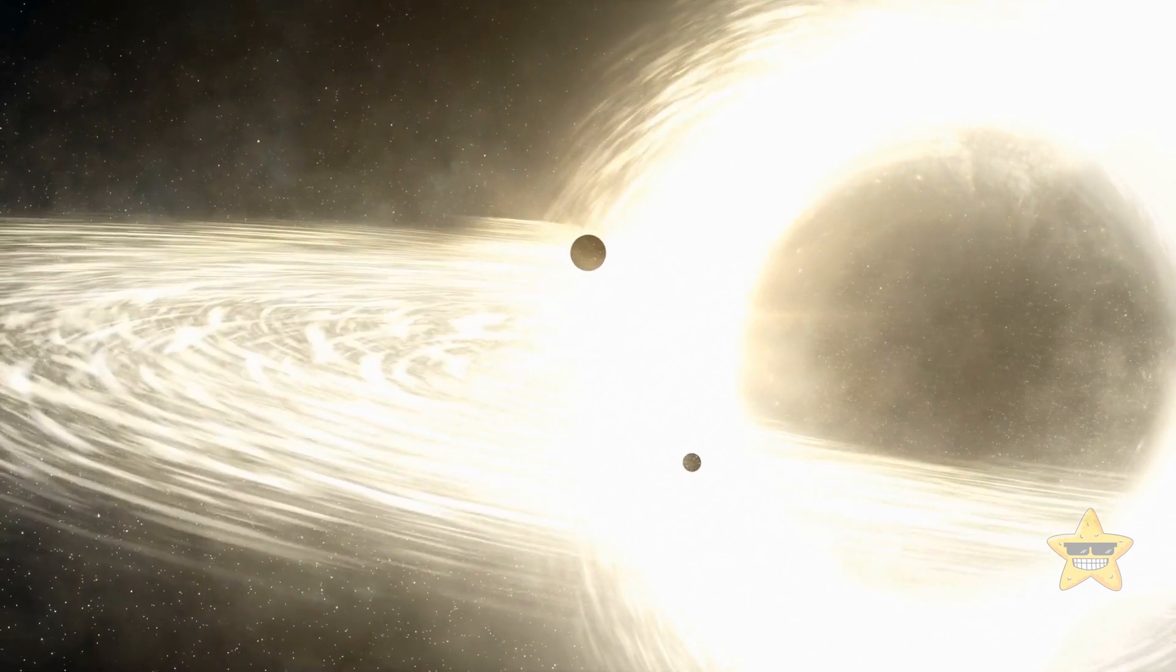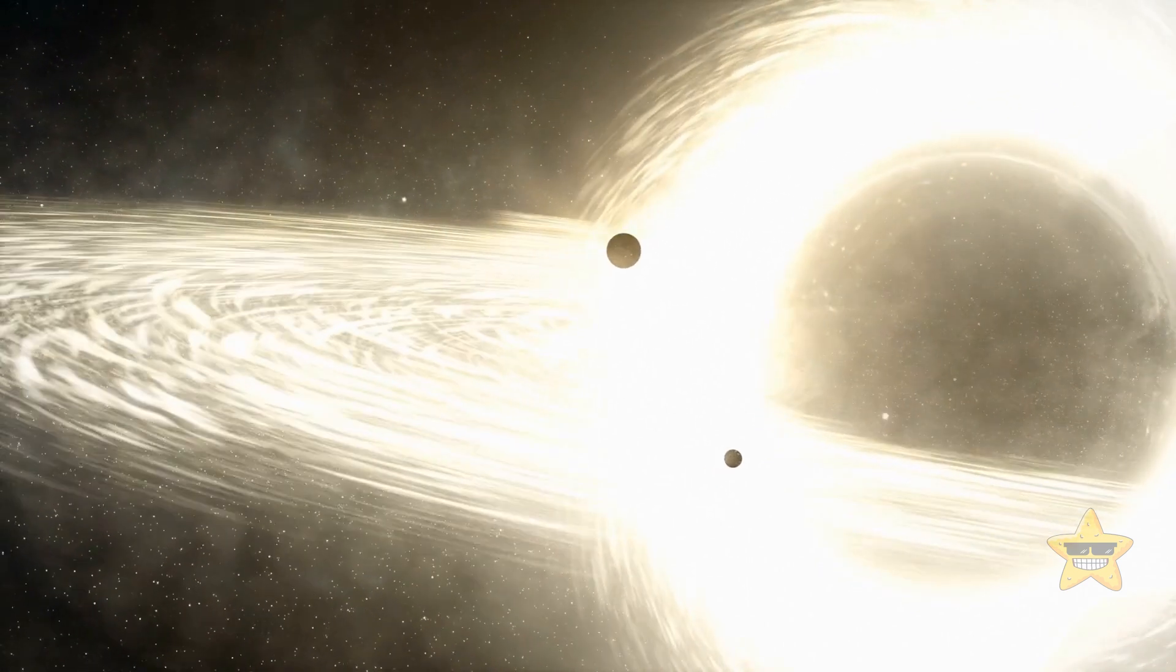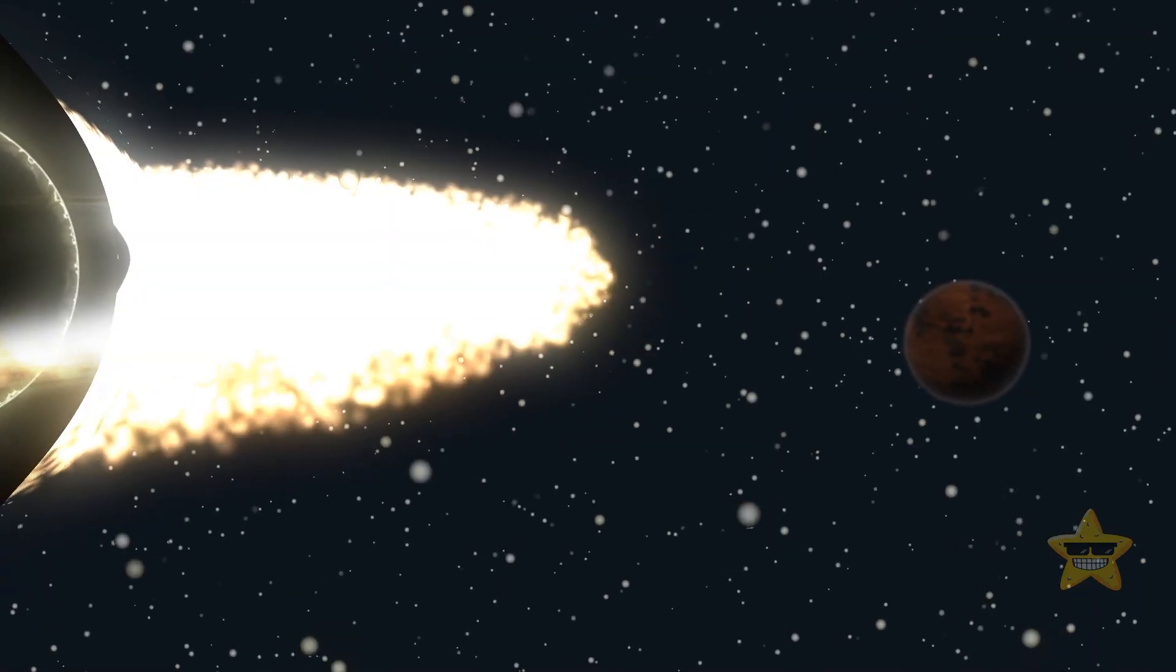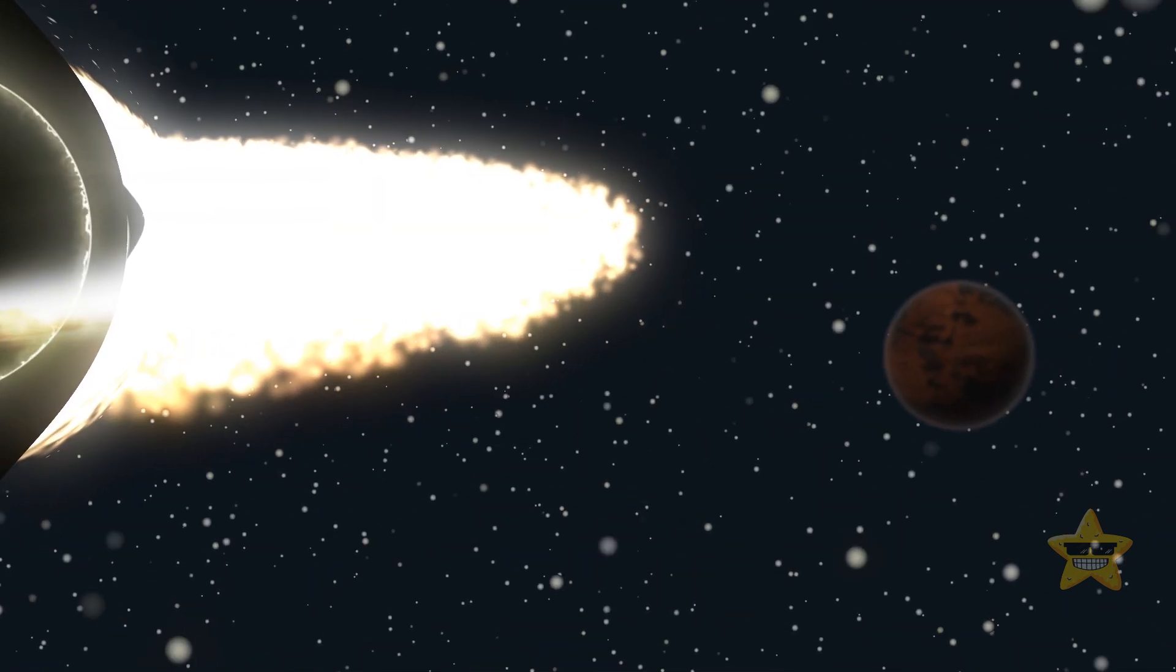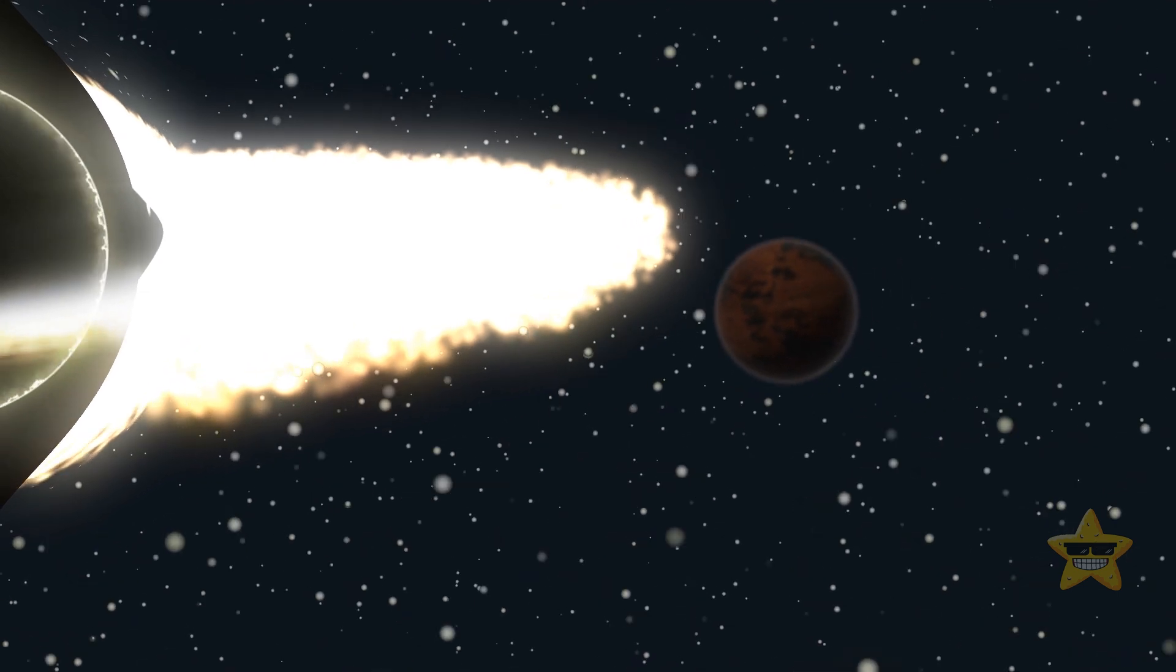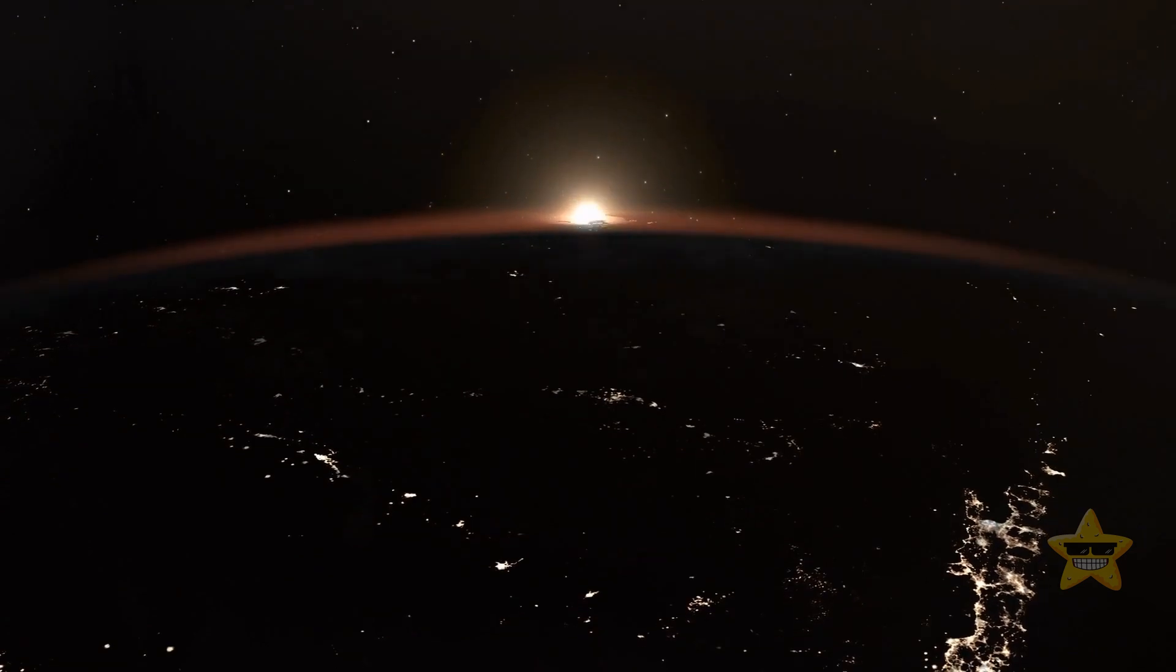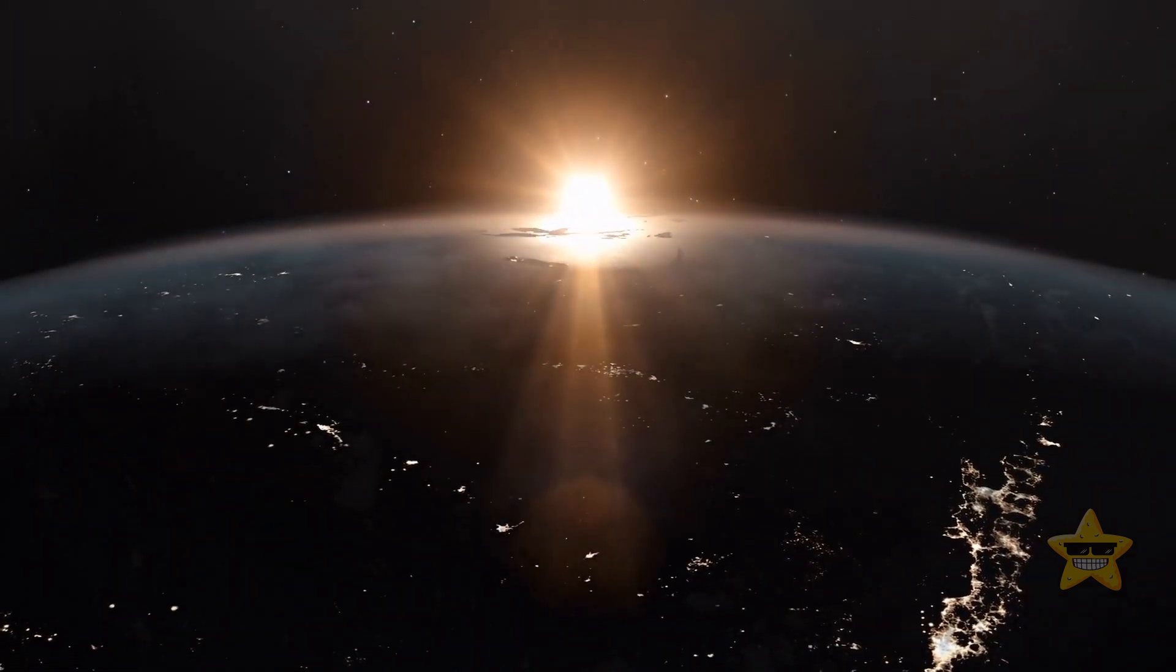Getting something to cross the event horizon isn't as easy as it may seem. The material needs to be pushed out of its stable orbit around the black hole. In other words, something must make it fall in. Just like it happens with the Sun and Earth. Despite the star's enormous gravity, our planet doesn't get pulled towards it.